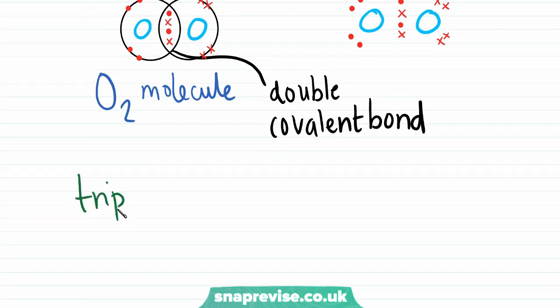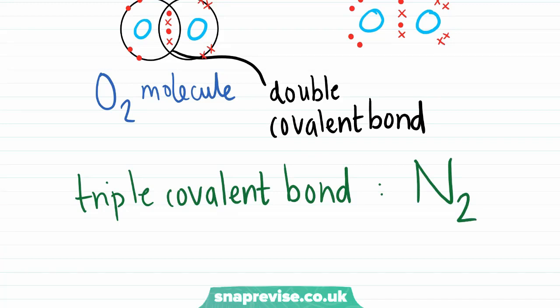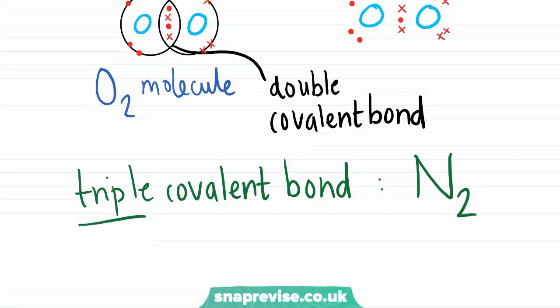It is also possible to have something called a triple covalent bond. And this is what you find in a molecule of nitrogen, or N2. In this case, each nitrogen atom had five electrons in its outer shell, so must share three in order to get a full eight. Sharing six electrons between two atoms results in a triple bond.